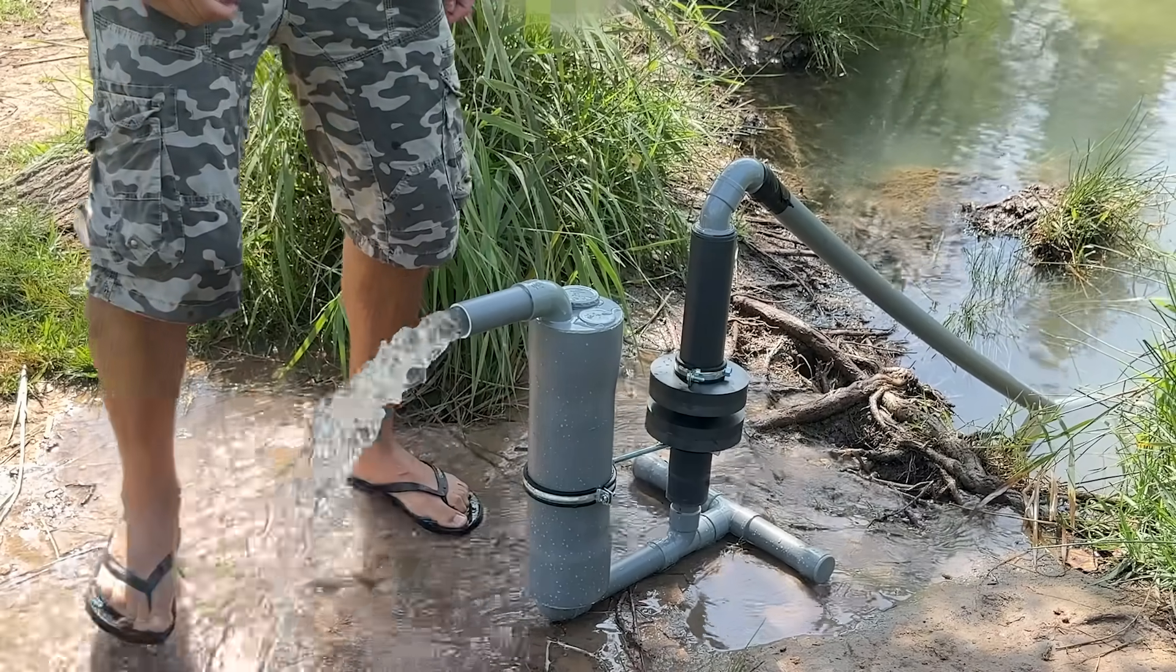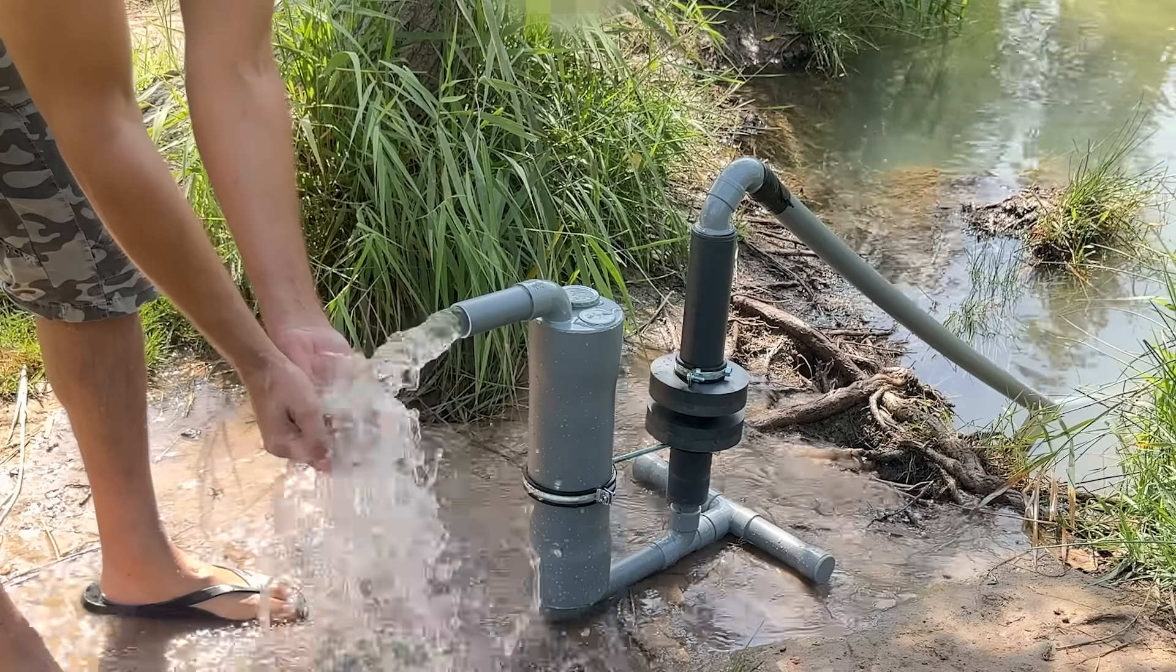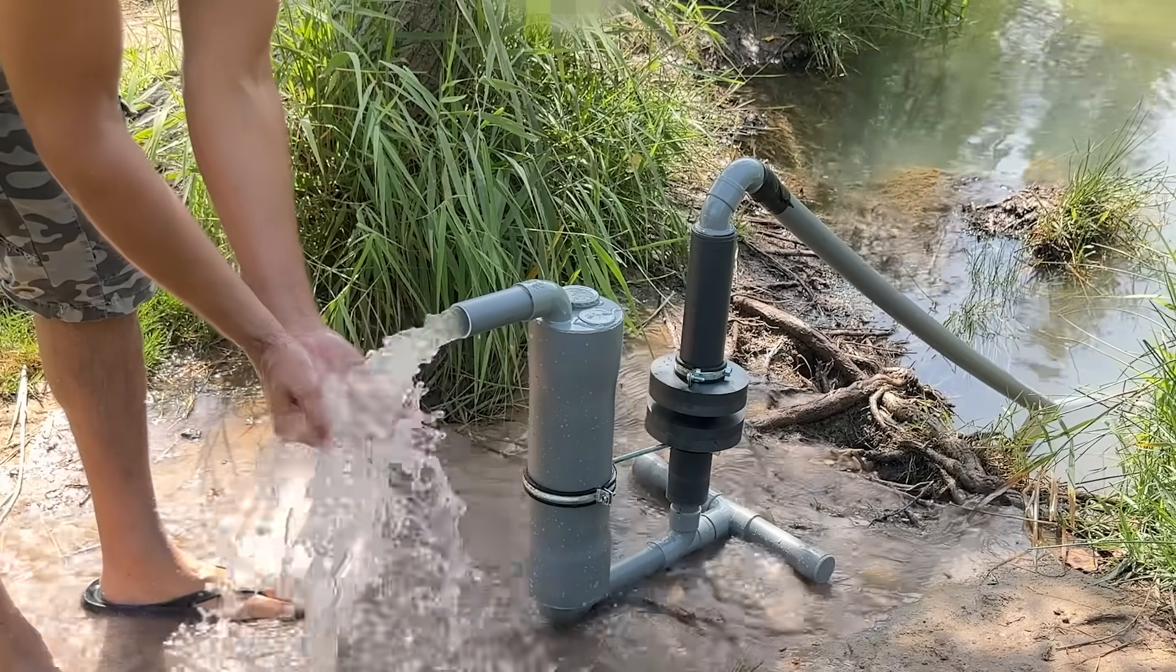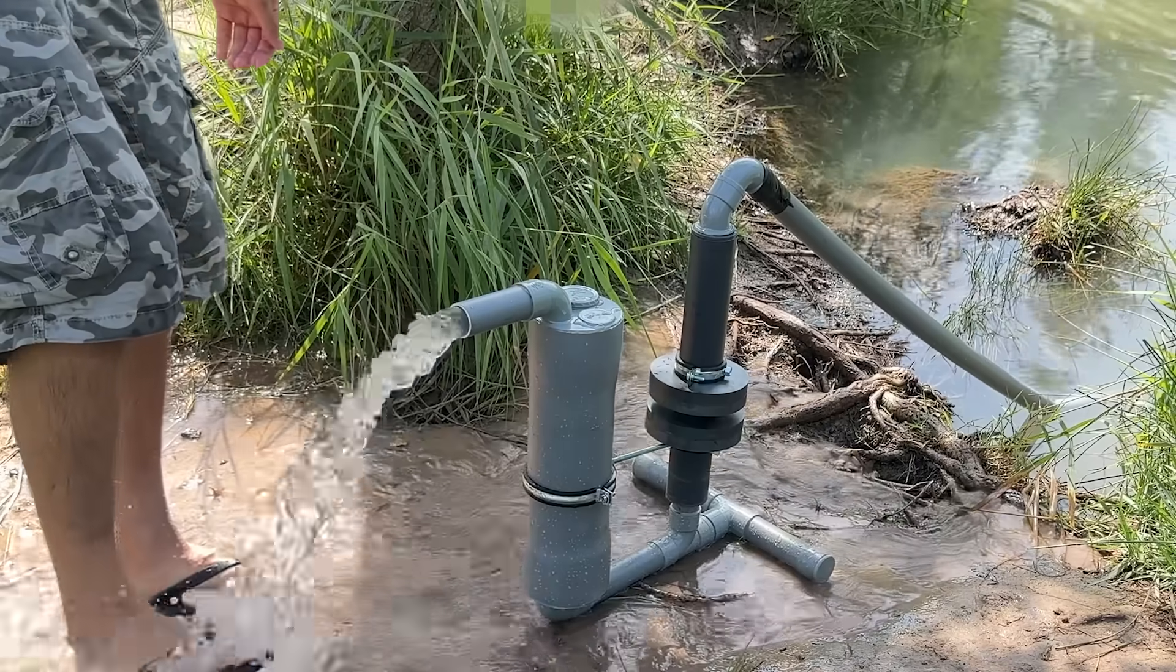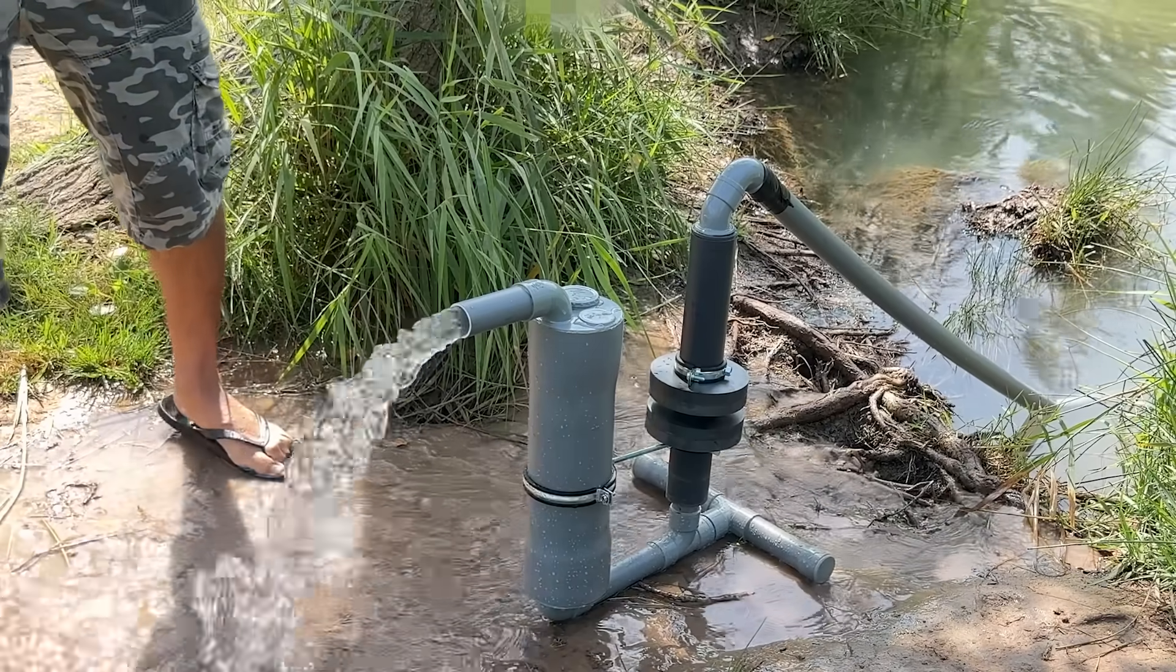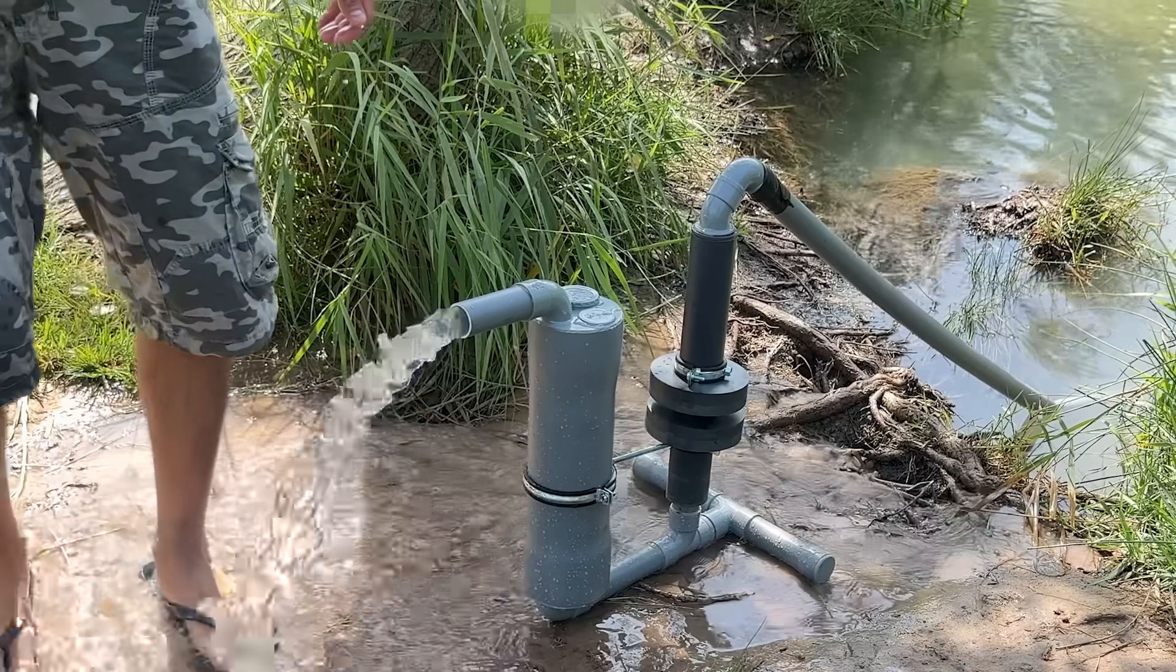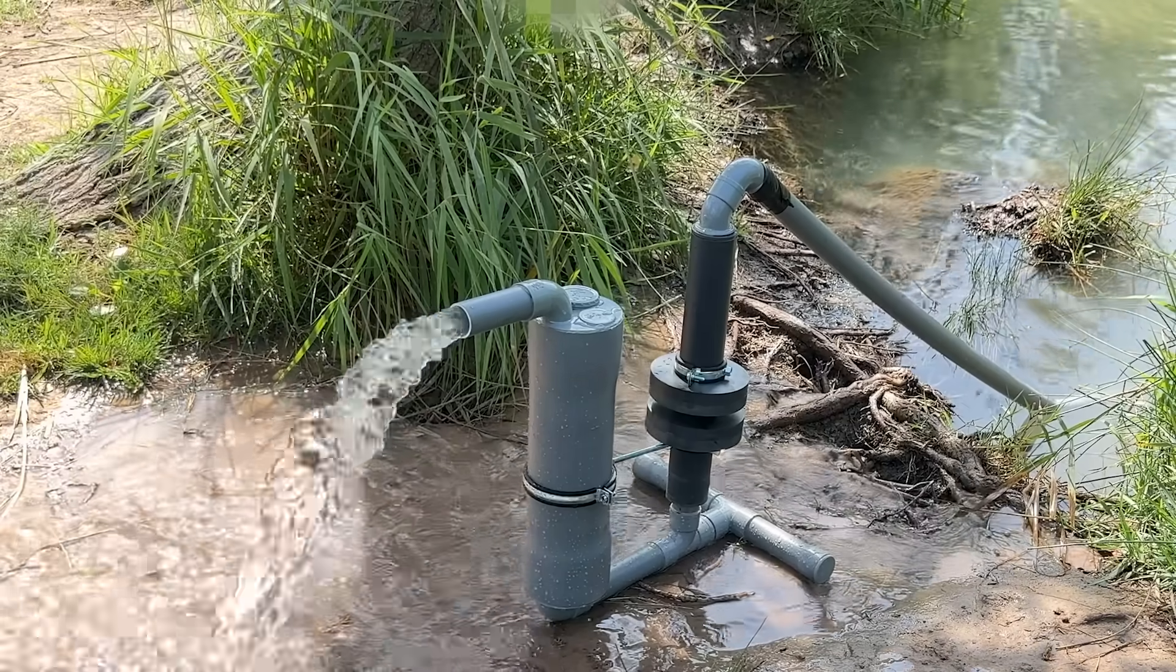When the upper magnet is released, it levitates by repulsion over the other. This creates a stable and continuous equilibrium that, combined with the venturi effect caused by the spiral holes in the metal tube, generates a localized depression that promotes the absorption of water from the riverbed.